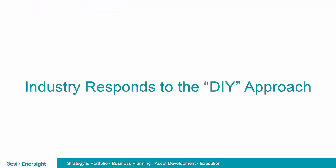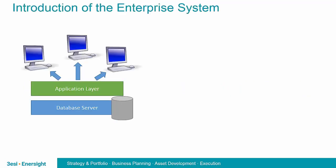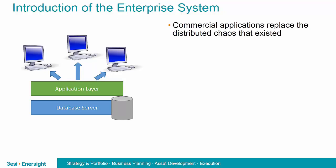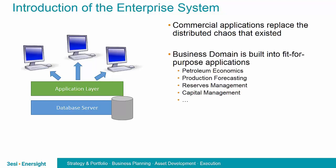In hindsight, spreadsheets were a natural starting point, but there were challenges that needed to be addressed. Industry recognized this, and they responded in kind — therein lies the introduction of the enterprise system. Enterprise systems first evolved from internal efforts to address those issues. Within organizations, individuals started writing software, perhaps Access-based, that was more fit for purpose. The applications focused in various disciplines: petroleum economics, production forecasting, reserves management, capital management, and many others. I'm sure a lot of you can think of specific examples of these first-generation applications that evolved out of the previous chaos.